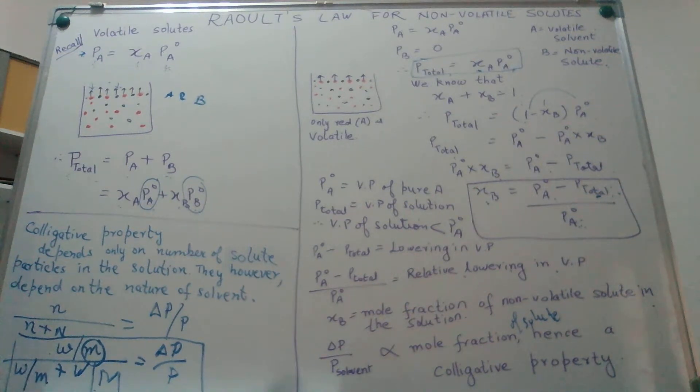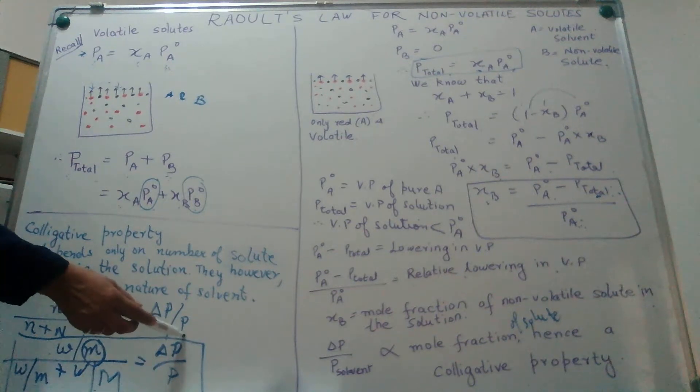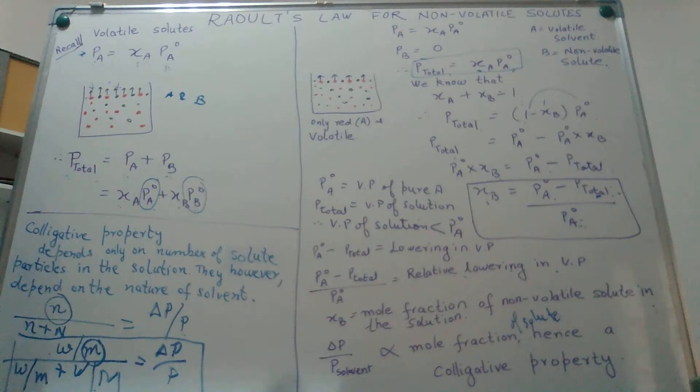Hence, this is a very simple way of determining the molar mass of non-volatile solute in chemistry. Such type of properties which depend on the number of particles which are in solution - if you notice, relative lowering of vapor pressure depends upon the number of moles of the non-volatile solute in the solution. Such type of properties are what are termed as colligative property, a property which depends not on the nature of the solute but on the number of solute particles, number of non-volatile solute particles in the solution. But they do get affected by the nature of the solvent. Our solvent is volatile solvent over here whereas our solute is a non-volatile solute.